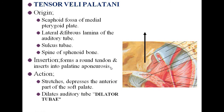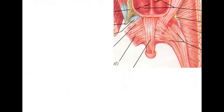Tensor veli palatini: it stretches and depresses the anterior part of the soft palate and also dilates the auditory tube. Its origin is from the scaphoid fossa of the medial pterygoid plate, lateral fibrous wall of the pharyngotympanic tube, sulcus tubae, and spine of the sphenoid. Insertion is into the palatine aponeurosis — it forms a round tendon and is finally inserted into the palatine aponeurosis.